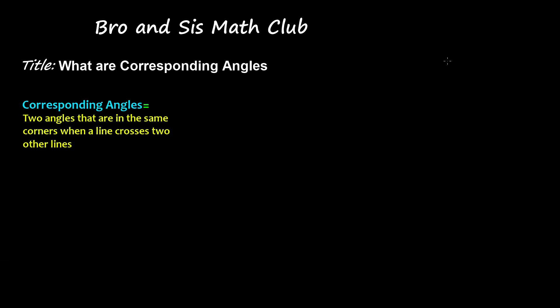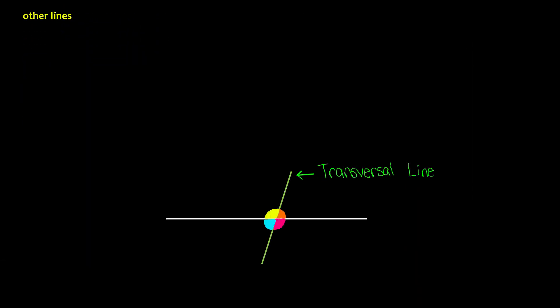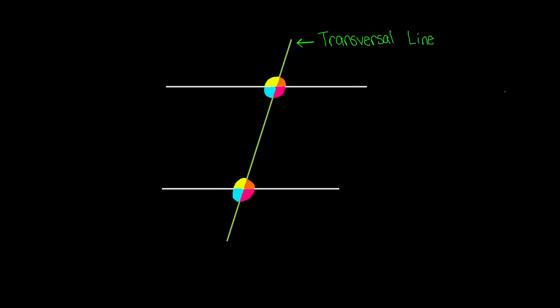Hey guys, welcome back to BronzeSysMathClub. Today's topic is what are corresponding angles. Corresponding angles are two angles that are in the same corners when a line crosses two other lines. Here we have a green line, which is called the transversal line. This green line is crossing two other parallel lines, forming a total of eight angles.